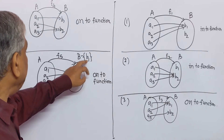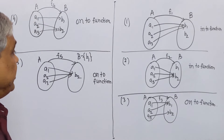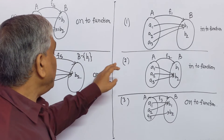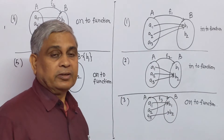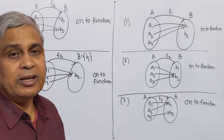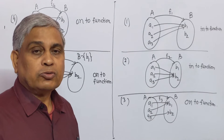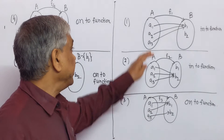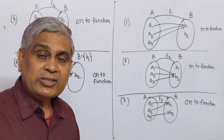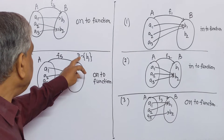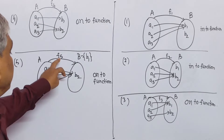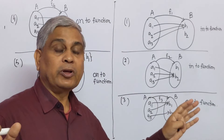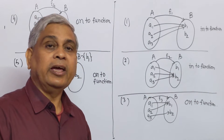Now, we have to find the number of ONTO functions. So, we have to find the total number of possible functions defined on set A to B, minus the number of INTO functions. We see that this function may be an INTO function, and this function is purely INTO when it is a member of all functions defined on A to B.